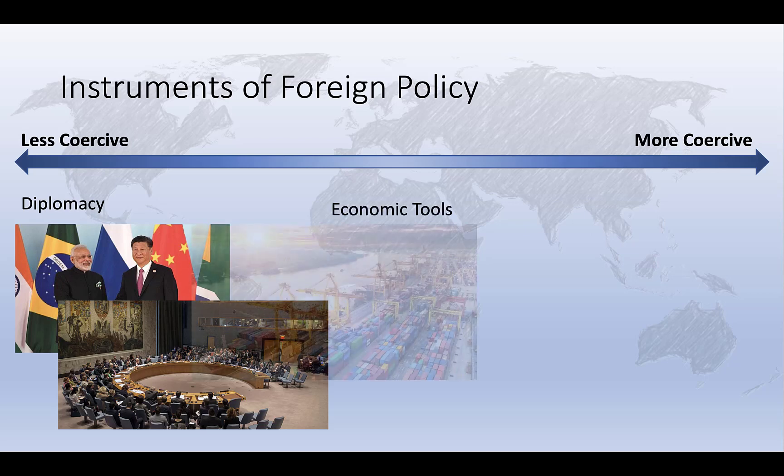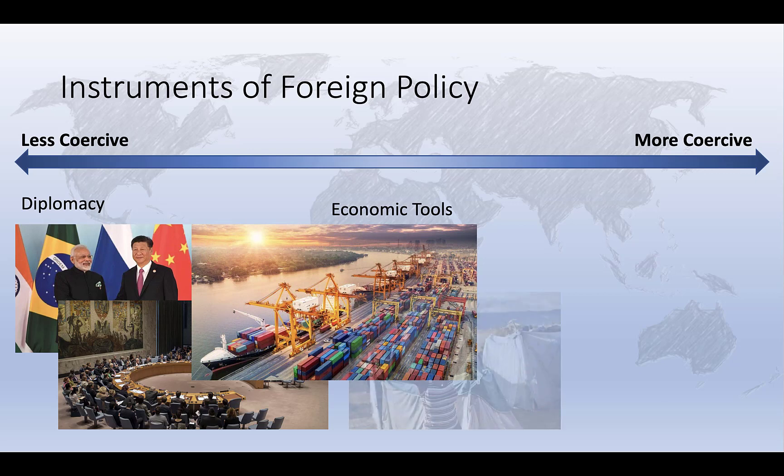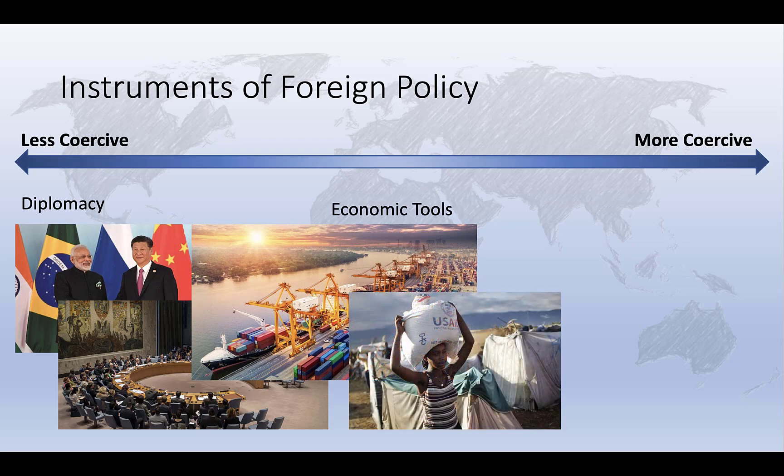States can also rely on a variety of economic tools to achieve their goals. Some economic tools, like offering foreign aid or extending preferential trade relations in exchange for concessions from another state, are relatively non-coercive and in many ways are closer to diplomacy. Others, like imposing sanctions or embargoes, are more coercive. Thus, we place economic tools at the middle of the spectrum.